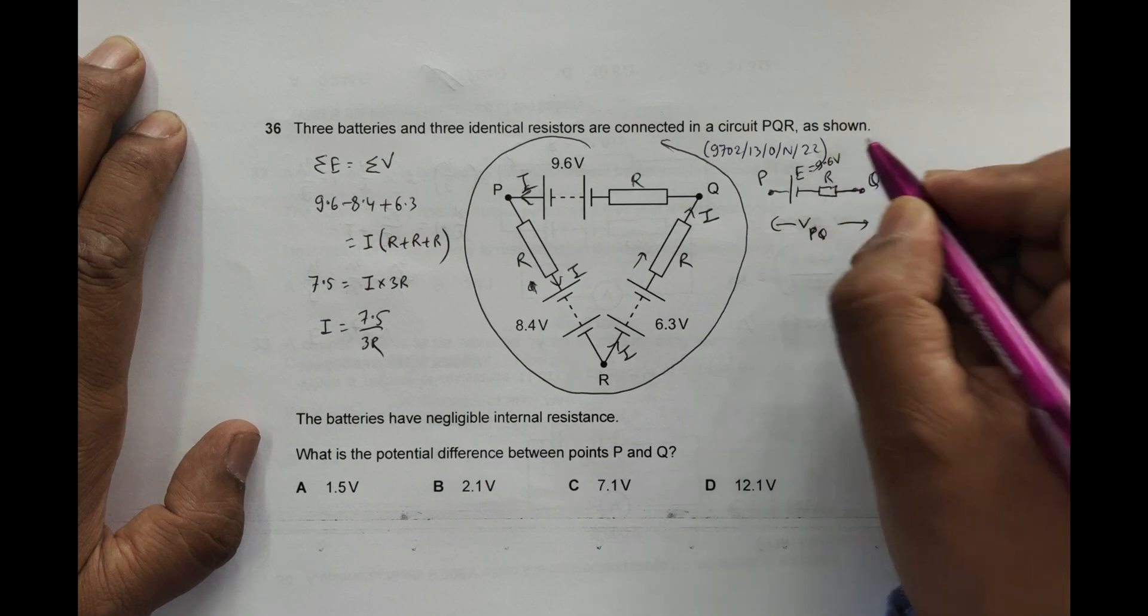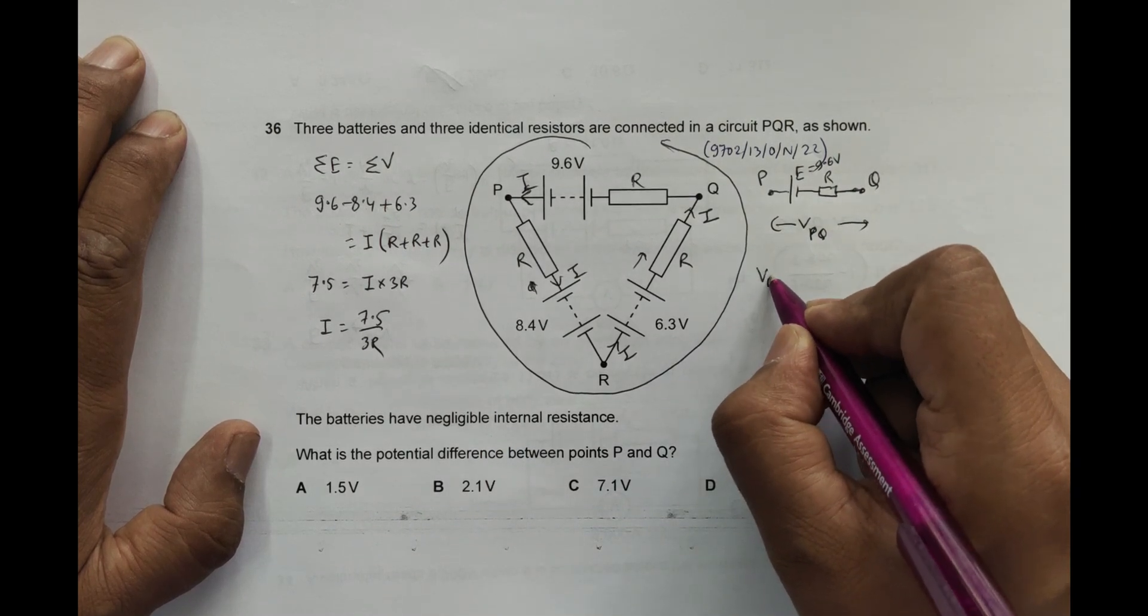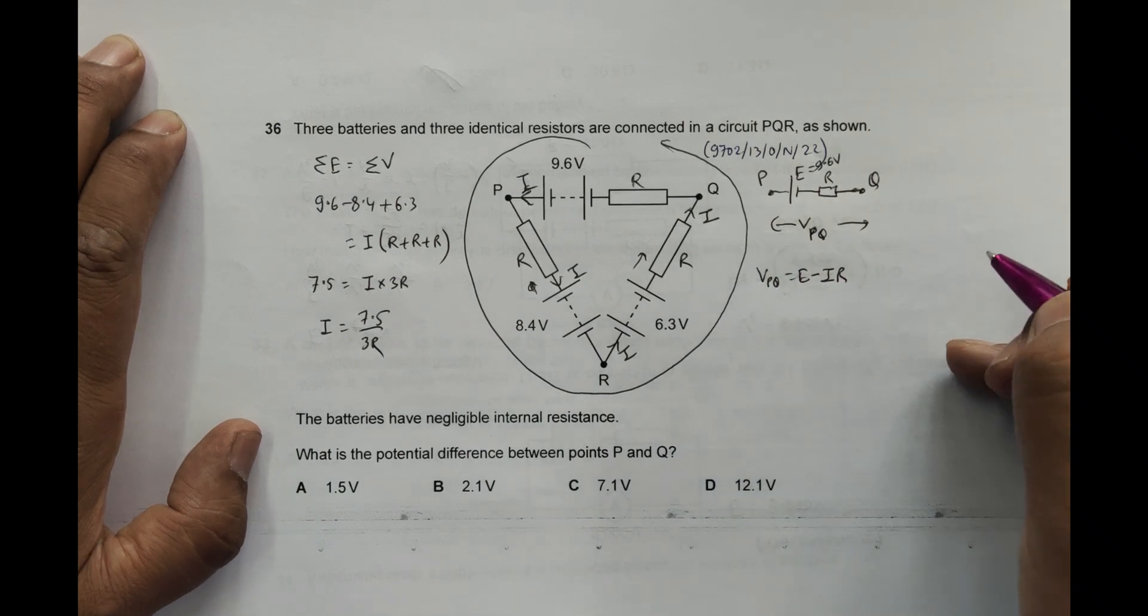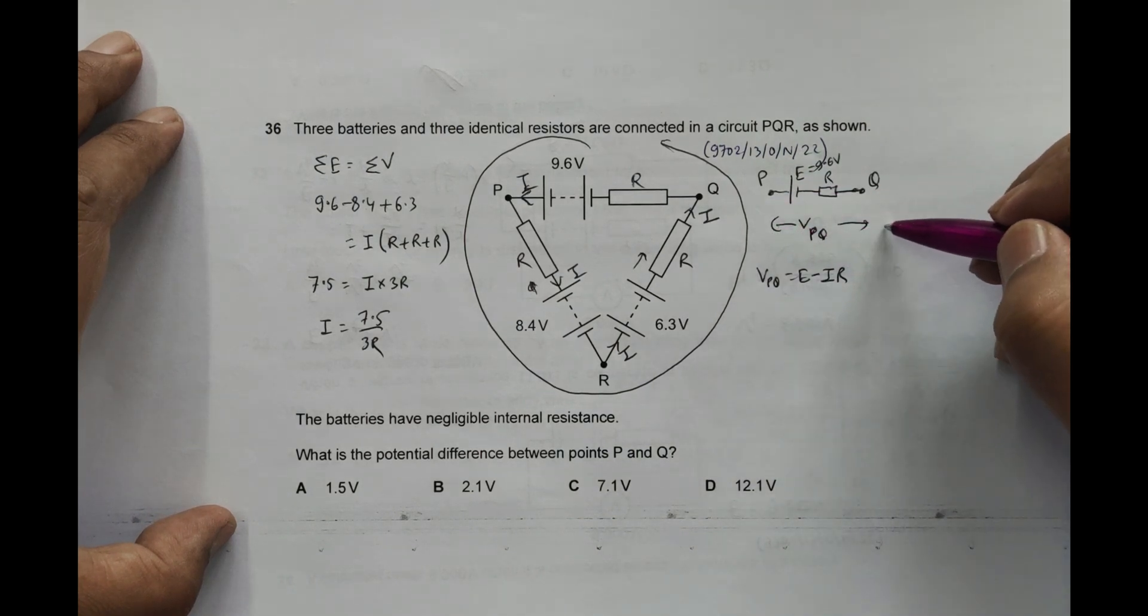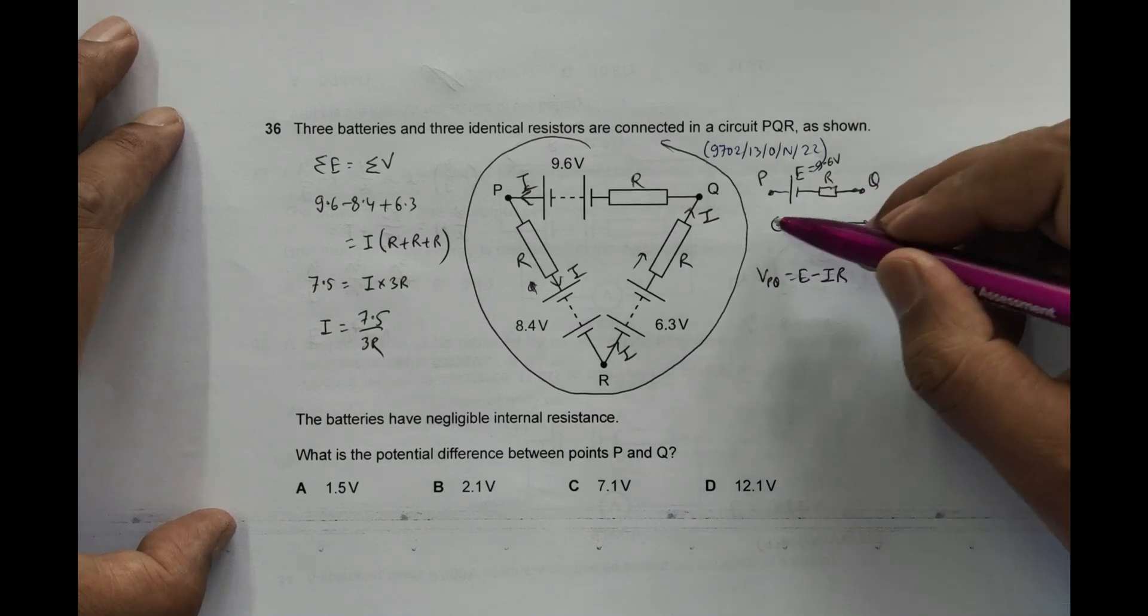So VPQ should be equal to E minus I into this R. The EMF provides voltage, certain amount is lost in the form of VPQ, and certain thing will be lost across this voltage. So VPQ equals E minus this loss.